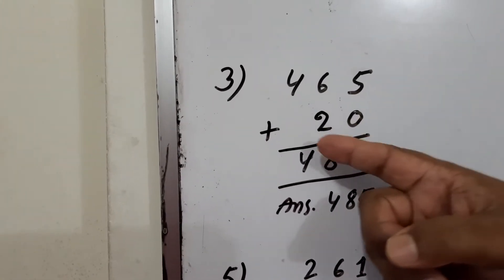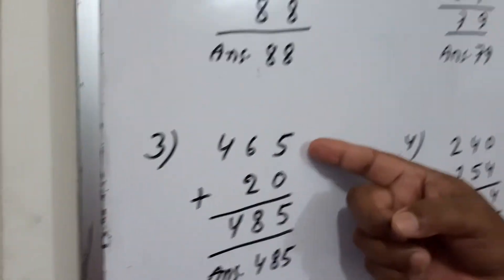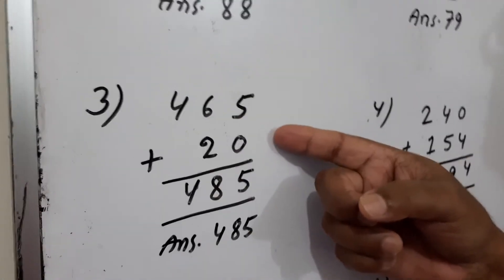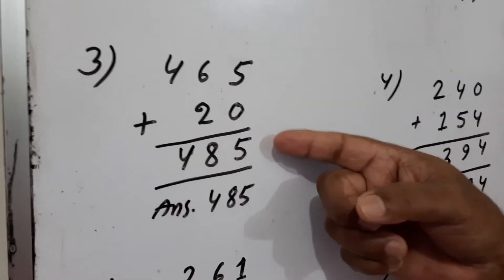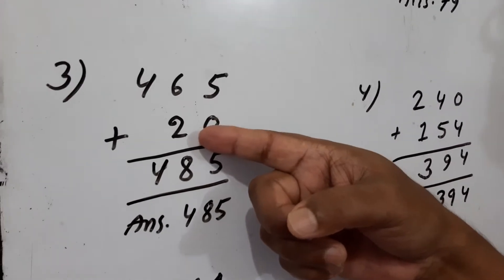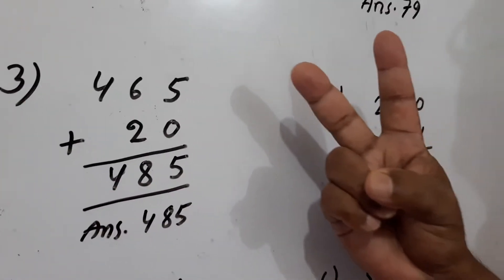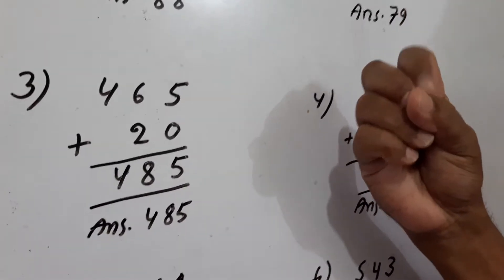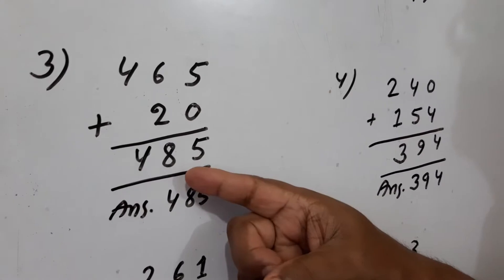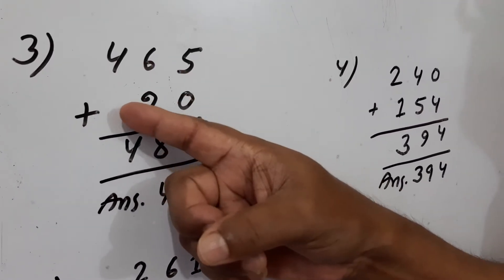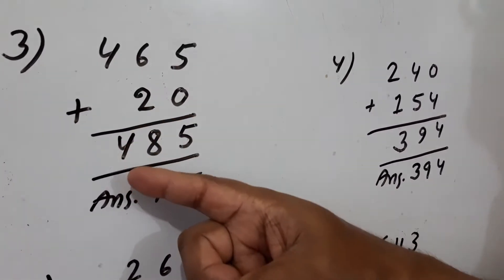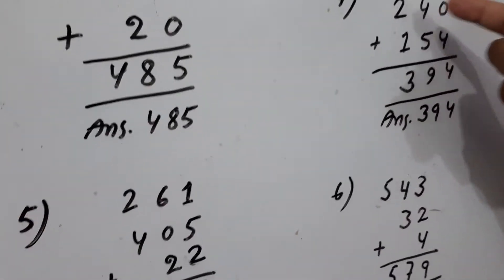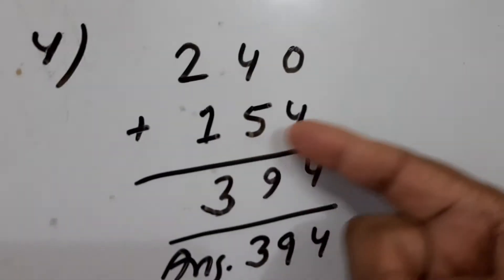465 plus 20. This is 5 and this is 5, and this is 5. Take 2 in hand: 6, 7, 8. This is 8. This is 4 and here is 0. 4 plus 0 is 4. Then this is 240 plus 154.